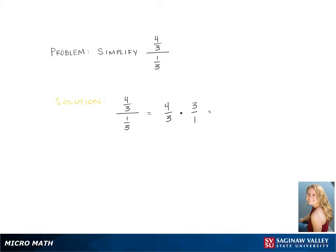Multiplying across gives us 4 times 3, which is 12, and 3 times 1, which is 3. Then 12 divided by 3 is 4, which gives us our final answer.